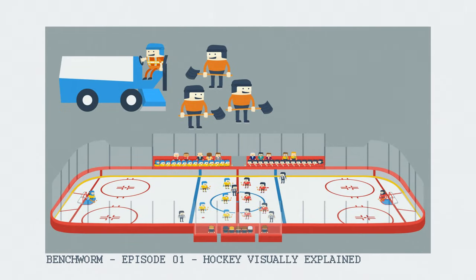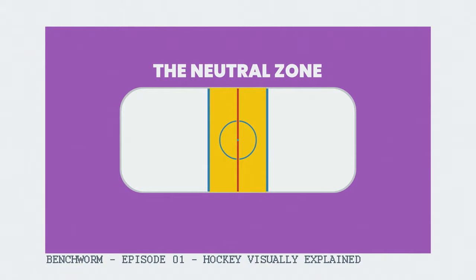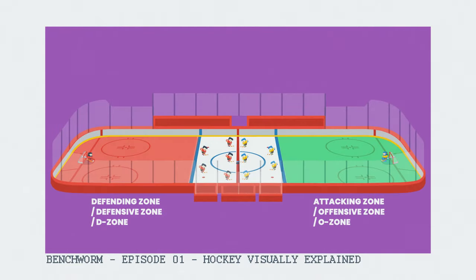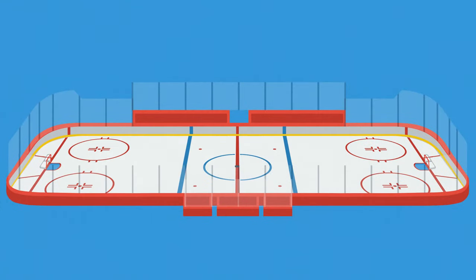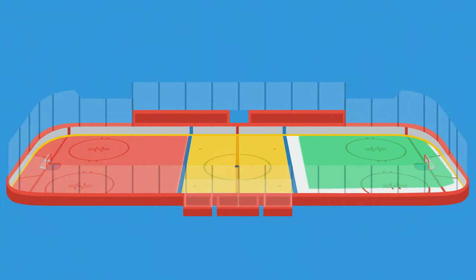As we mentioned in our Hockey 101 video, in hockey the ice is comprised of three zones: the neutral zone in the middle and the contextual offensive and defensive zones. Let's talk about what happens in each zone from the point of view of a team.